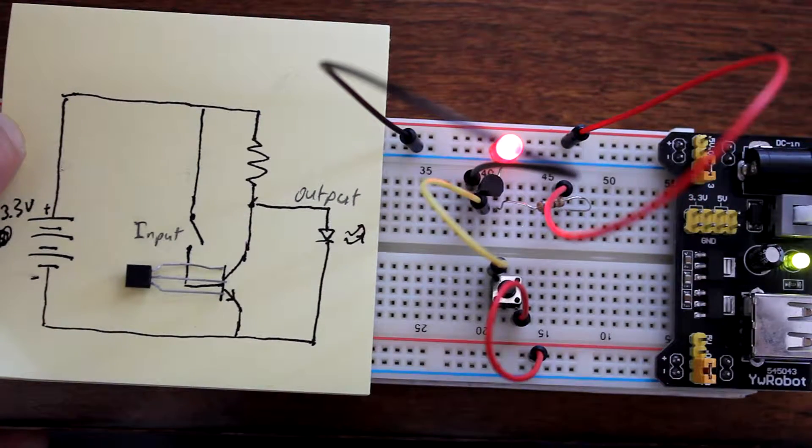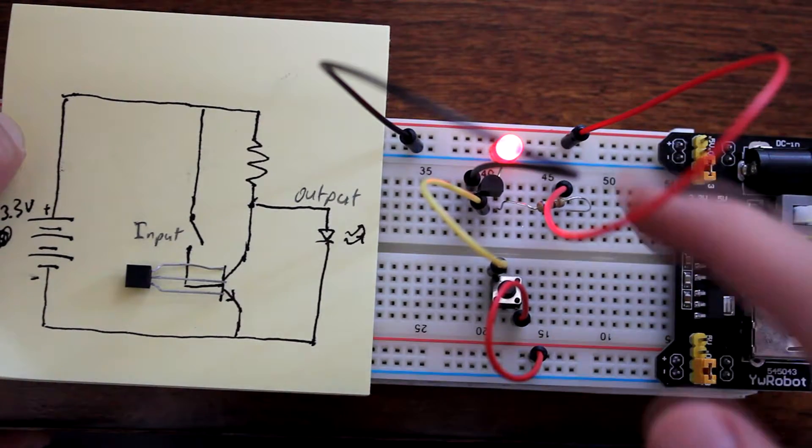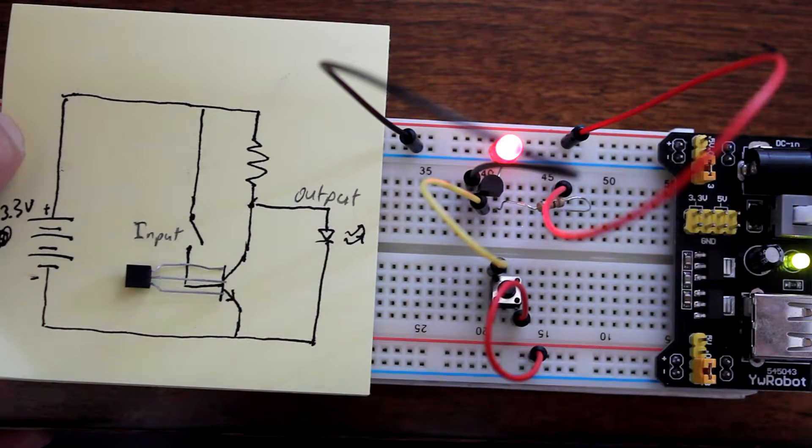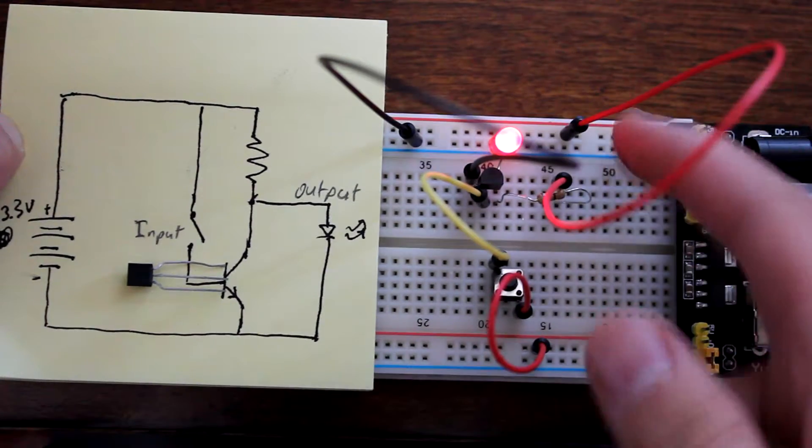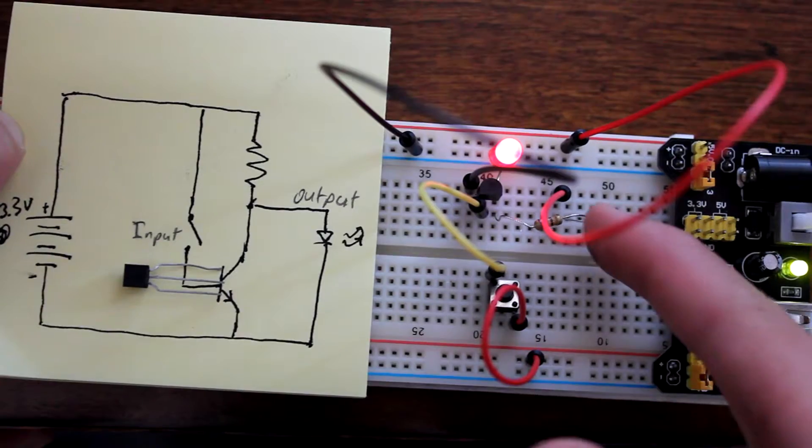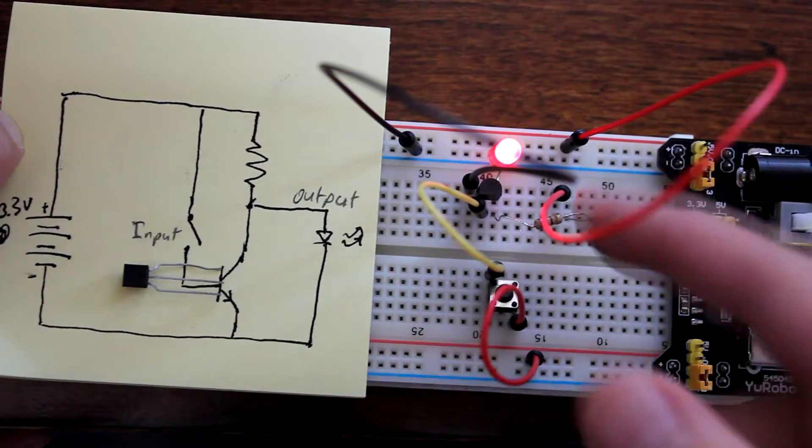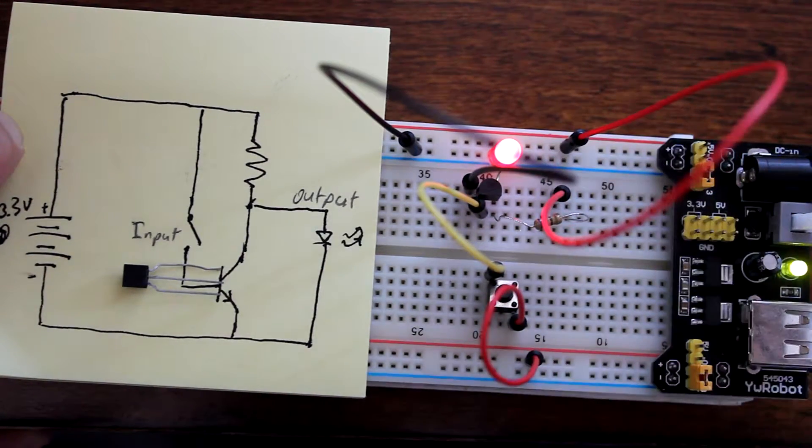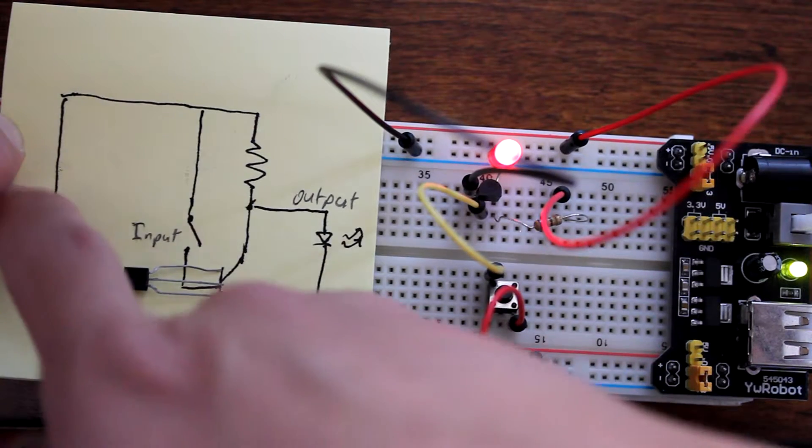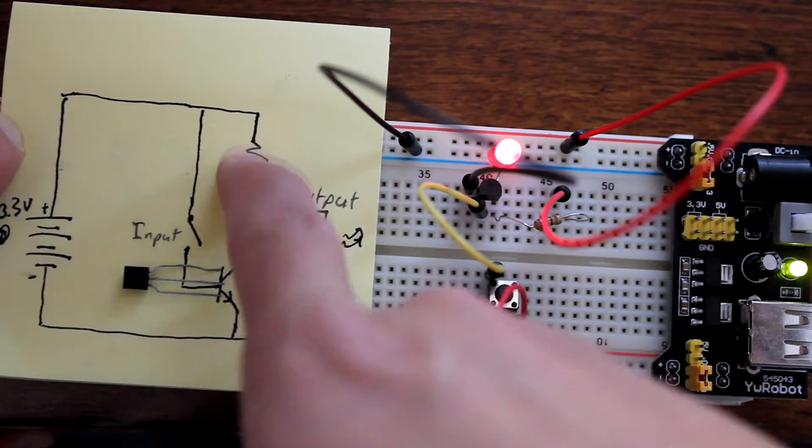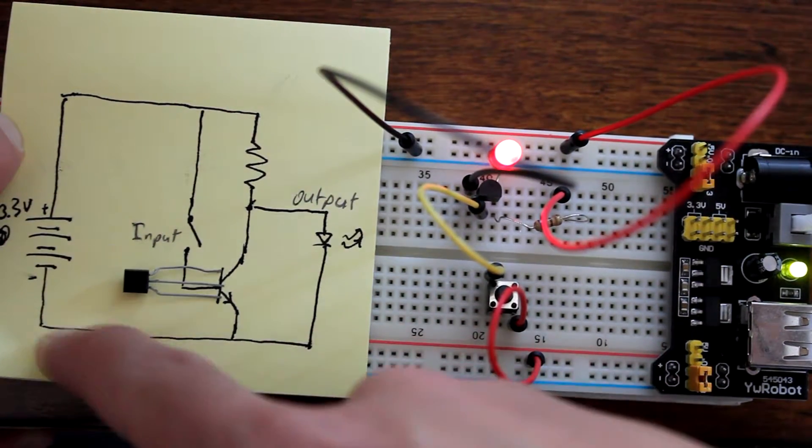To recap, the natural state of the LED is on because the positive rail goes to this resistor right here, which goes directly to the LED, which goes directly to the ground. So the positive voltage goes around through the LED and back to the ground.